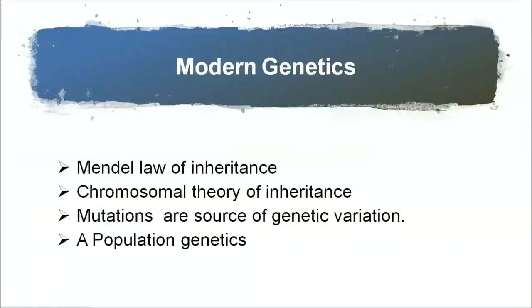In modern genetics, in the early 20th century, a lot of work was done. First was Mendel's law of inheritance studied in the previous chapter. Then the chromosomal theory of inheritance given by Sutton and Boveri clearly showed that chromosomes are the carriers of hereditary material. Mutations are the source of genetic variation, and population genetics studies how nature selects individuals through selection pressure in a population.